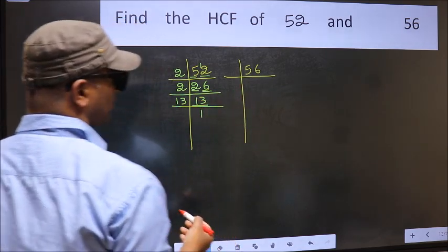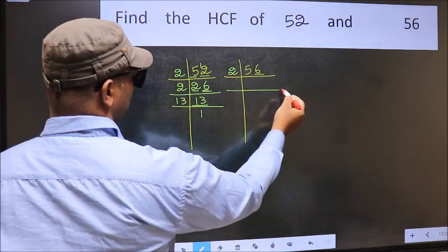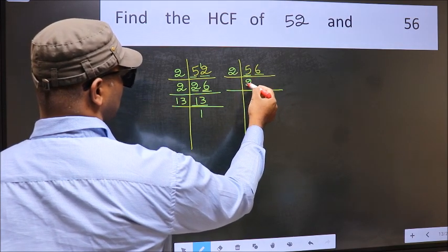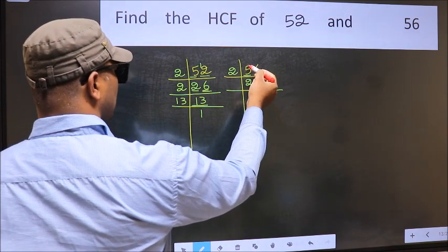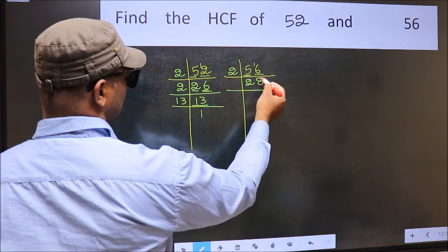The other number. Last digit 6 even, so take 2. First number 5, a number close to 5 in 2 table is 2 times 4. 5 minus 4 is 1, 1 carried forward 16. When do we get 16 in 2 table? 2 times 8 is 16.